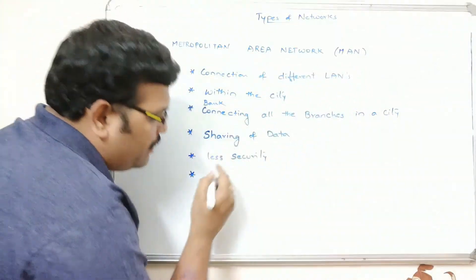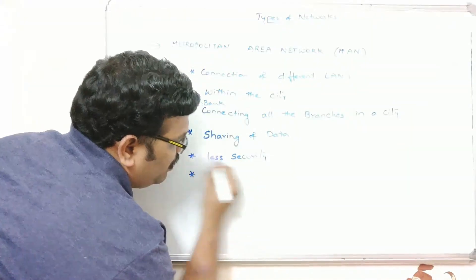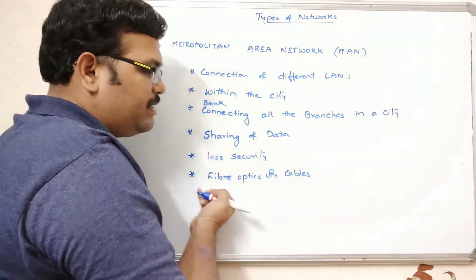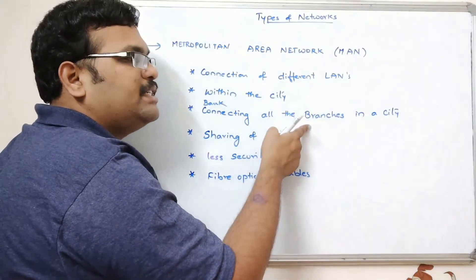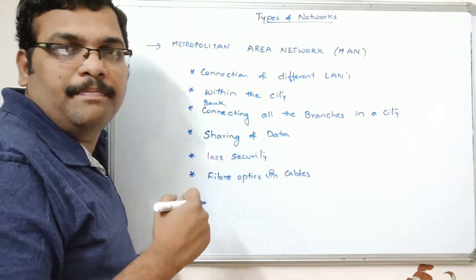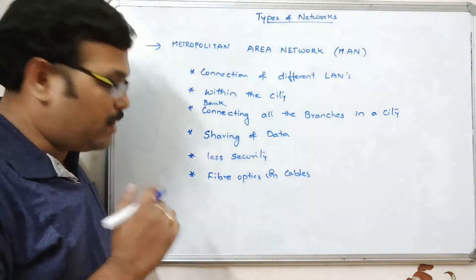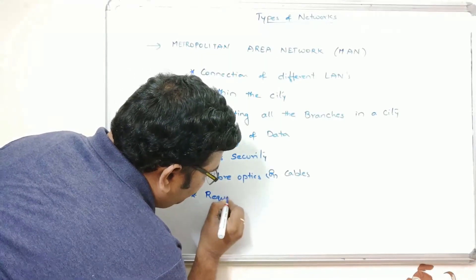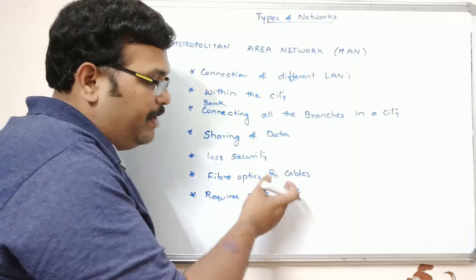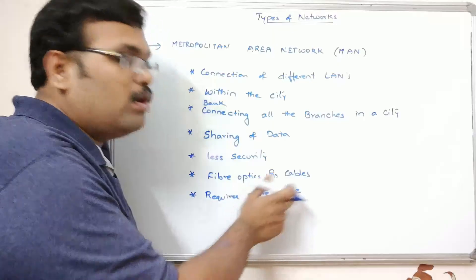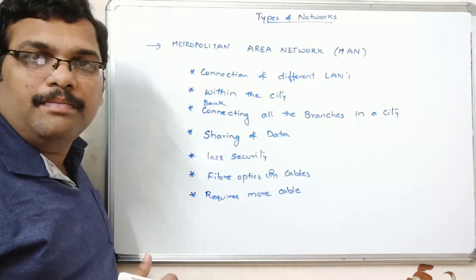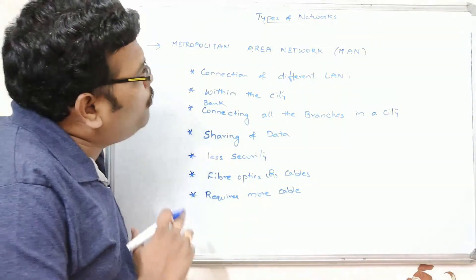The different LANs in a MAN are connected with the help of fiber optics or cables. Using these transmission media, data can be shared from one branch to another branch in a city. The main drawback of MAN is that it requires more cables — as the number of branches in a city increases, more cable or fiber optics are needed to connect them all.